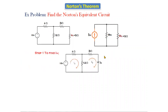To find I_N: short circuit the load resistance and find the current passing through the short circuit terminal branch. In this loop, the current flowing through this branch is i2. If we know the value of i2, then i2 is nothing but I_N, because the current passing through this branch is i2. So i2 equals Norton's current.